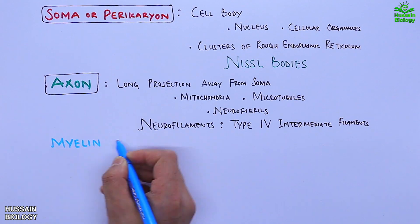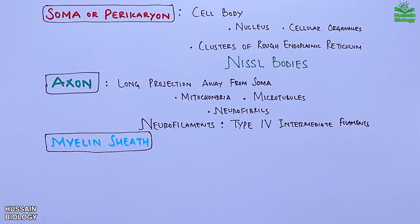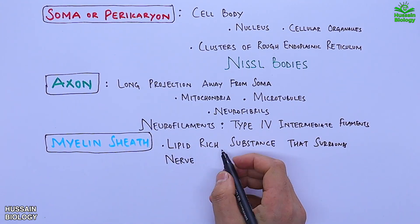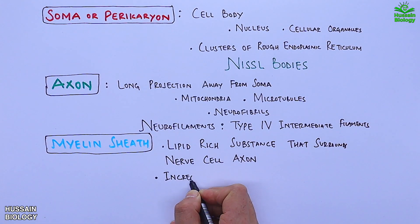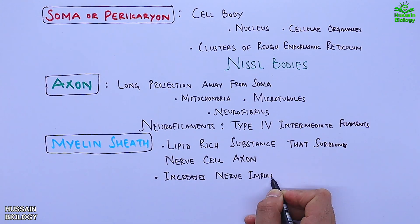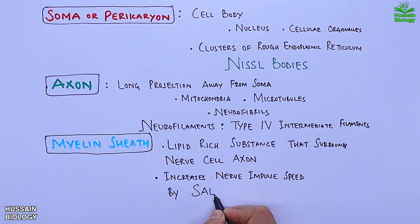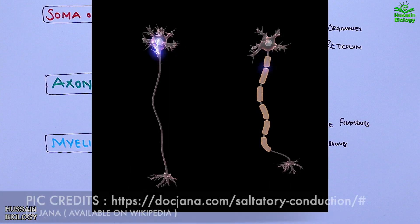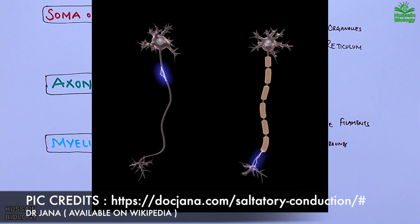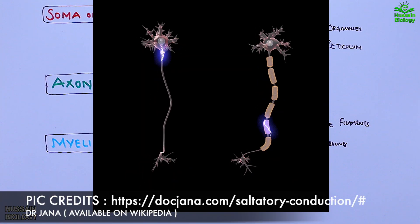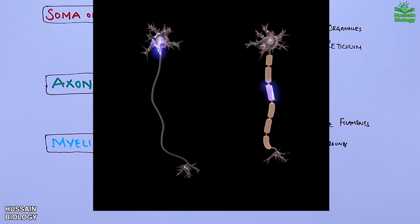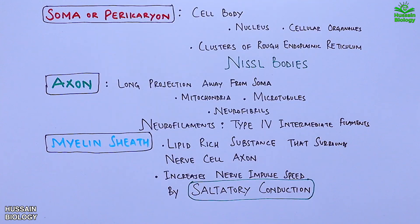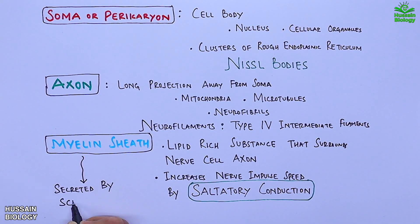Then we have the myelin sheath, which is a lipid-rich substance that surrounds the nerve cell axon. It increases impulse speed by saltatory conduction. As shown in this animation, nerve impulse speed differs in both myelinated and non-myelinated neurons. This myelin sheath is secreted by Schwann cells.